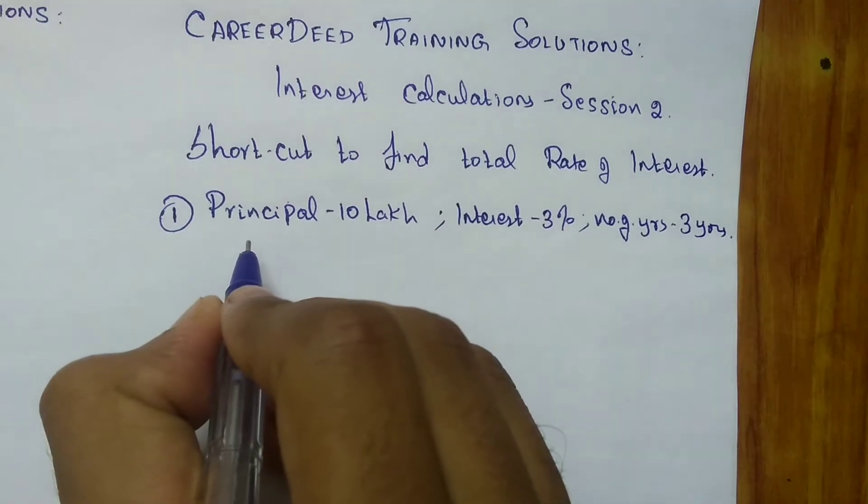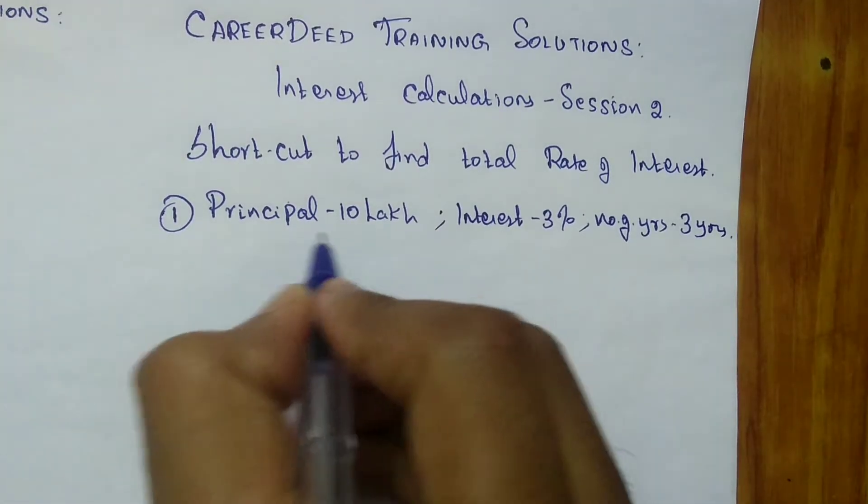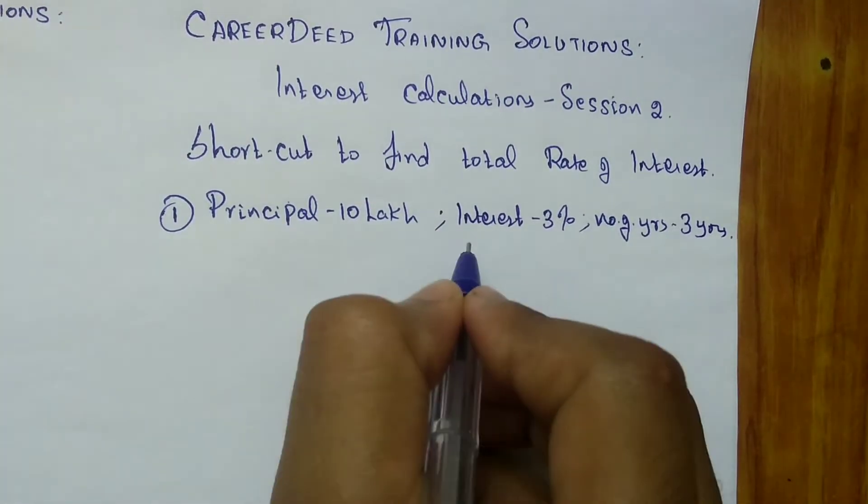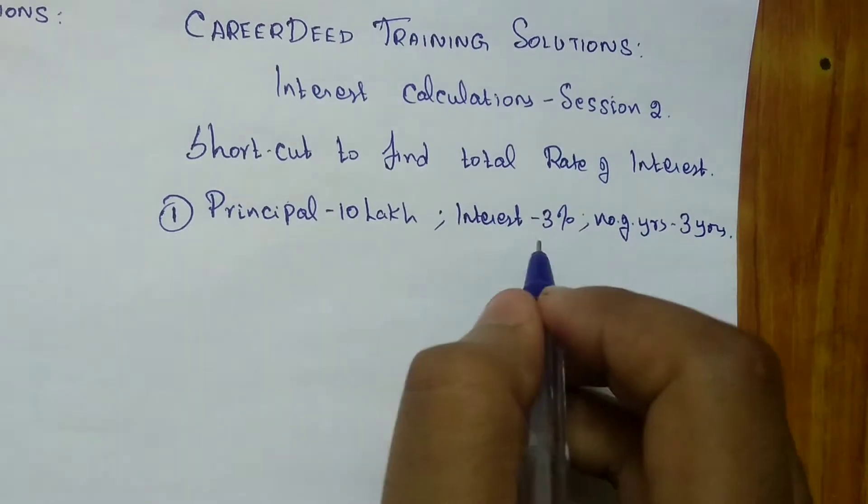So here I provided you an example. You borrowed 10 lakh rupees from the bank, which is principal, and the rate of interest is 3% and the number of years is 3 years.